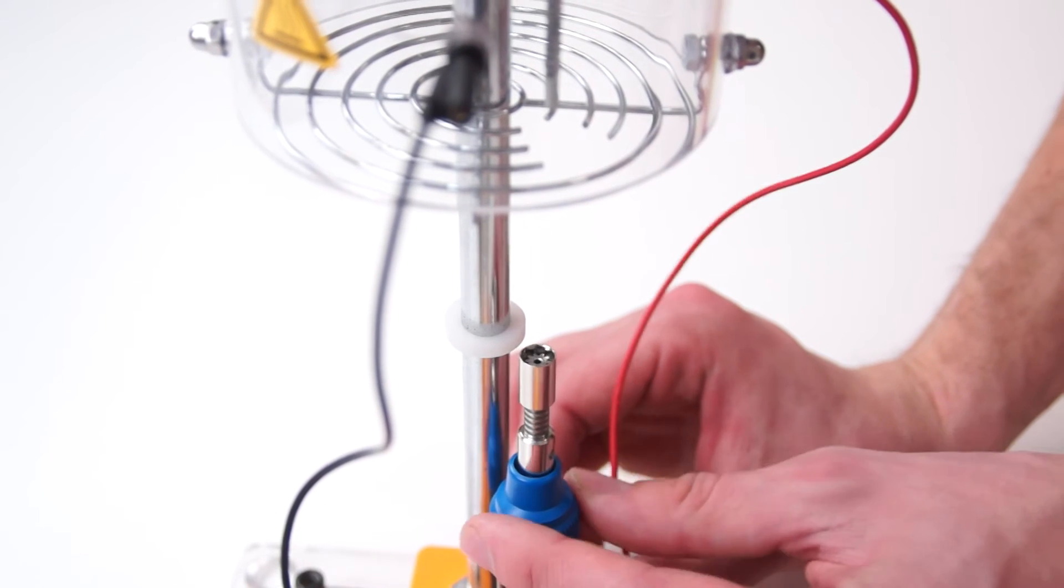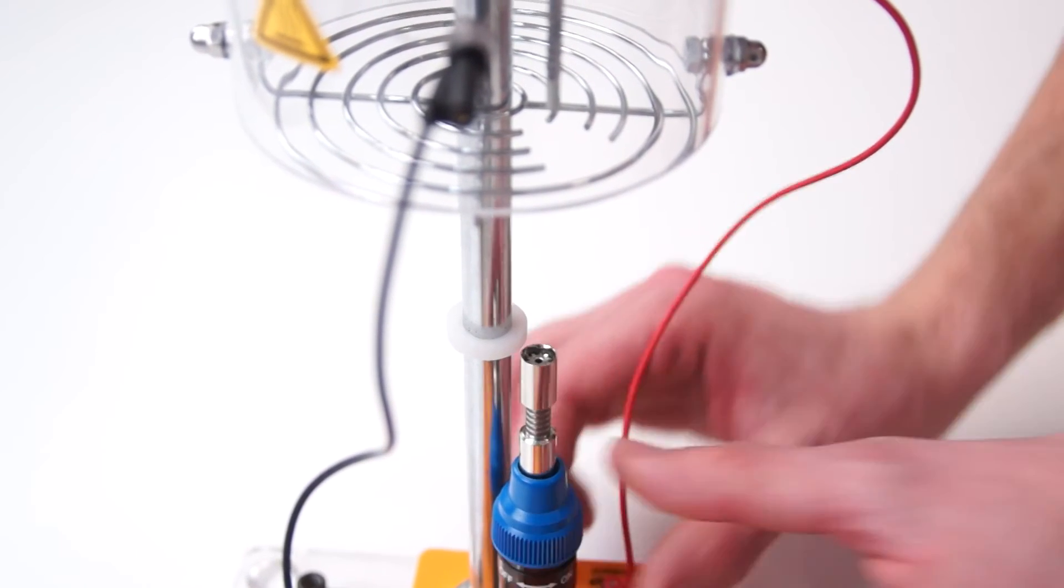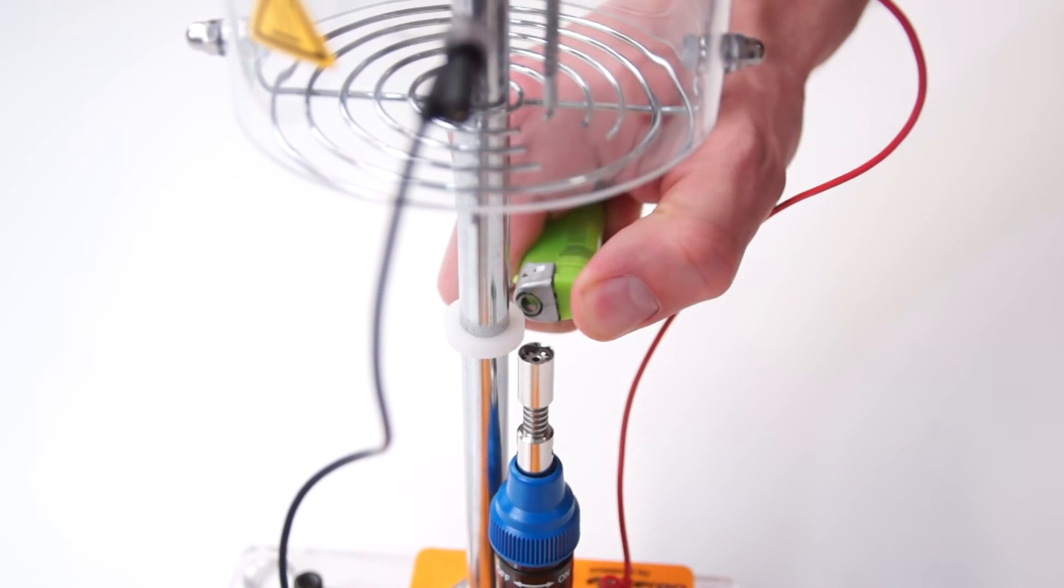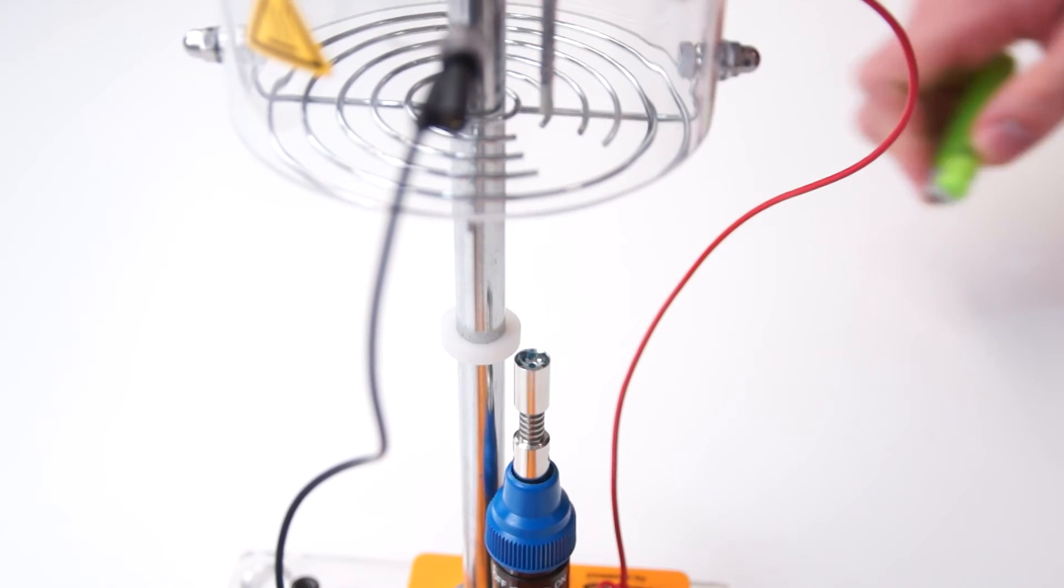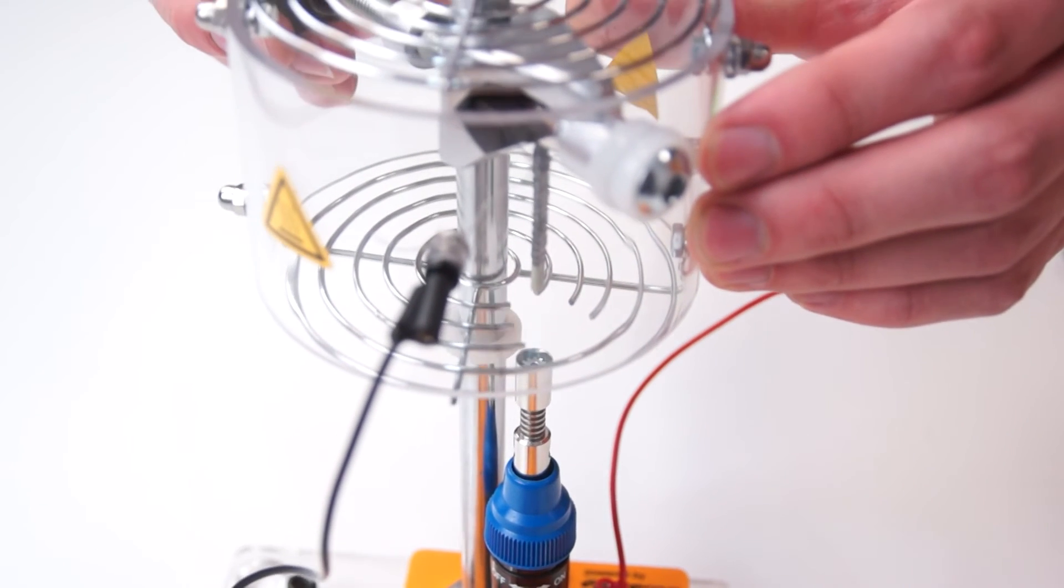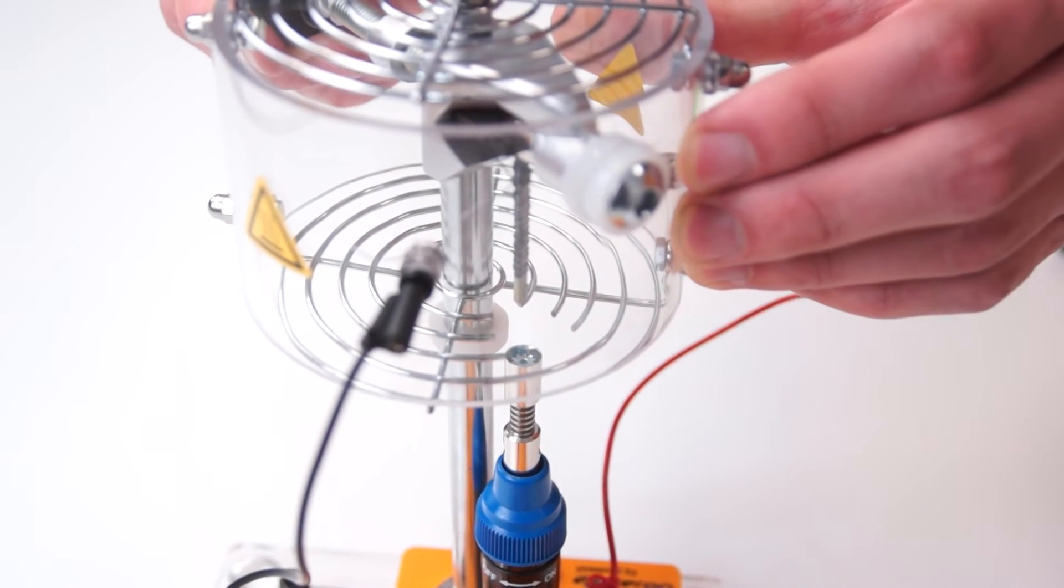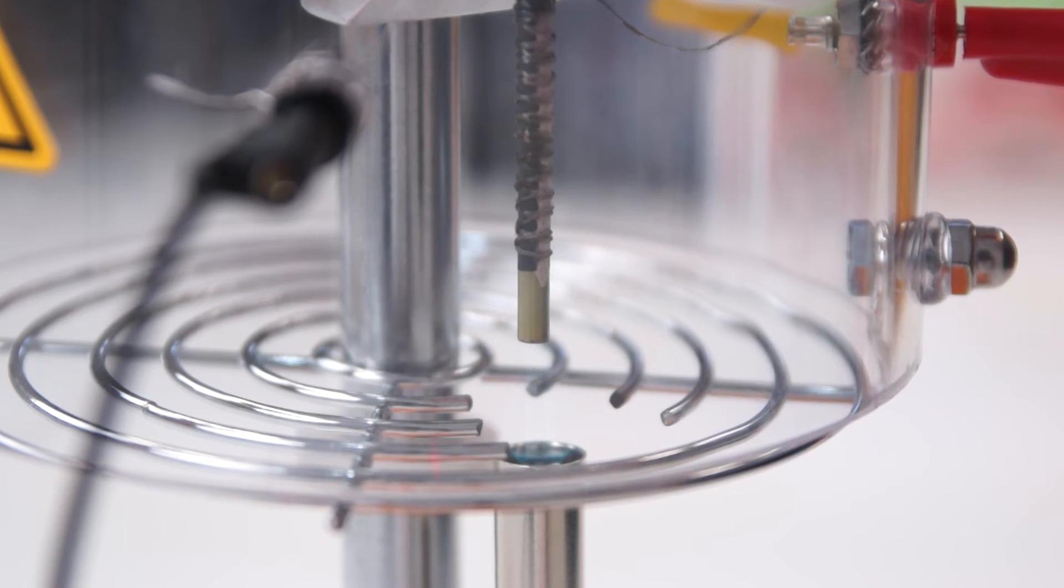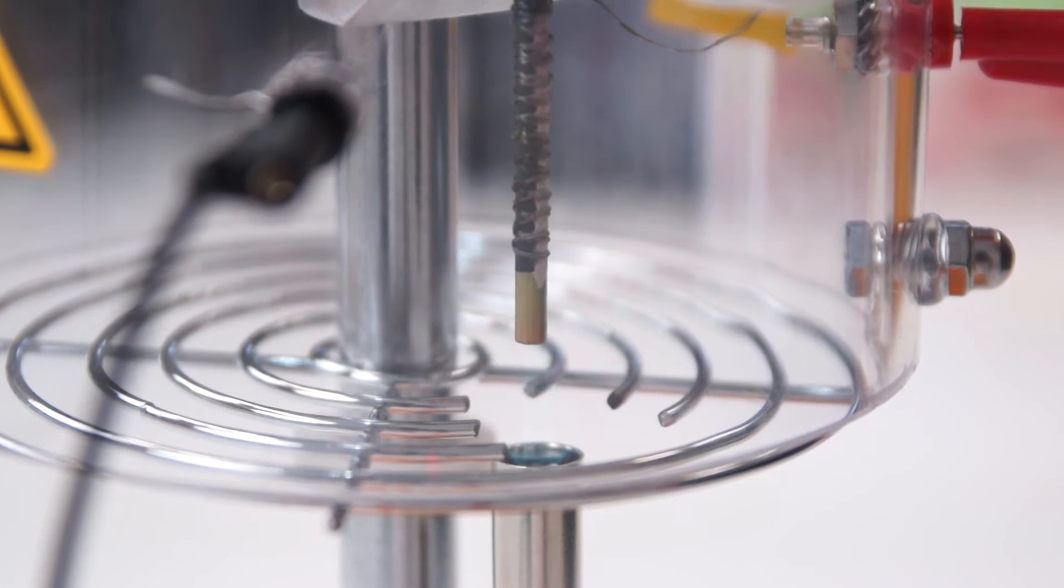For this we turn on the gas supply of the burner and ignite the propane butane gas mixture. Then we push the fuel cell carefully into the flame until the tip of the flame touches the fuel cell. As we can see the piece of metal is heated.